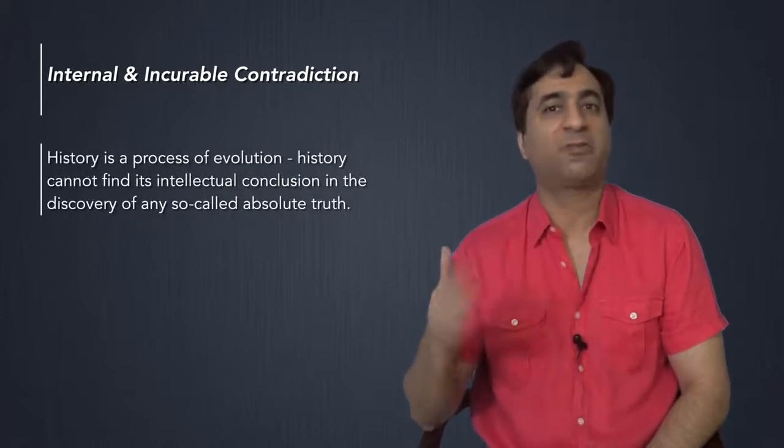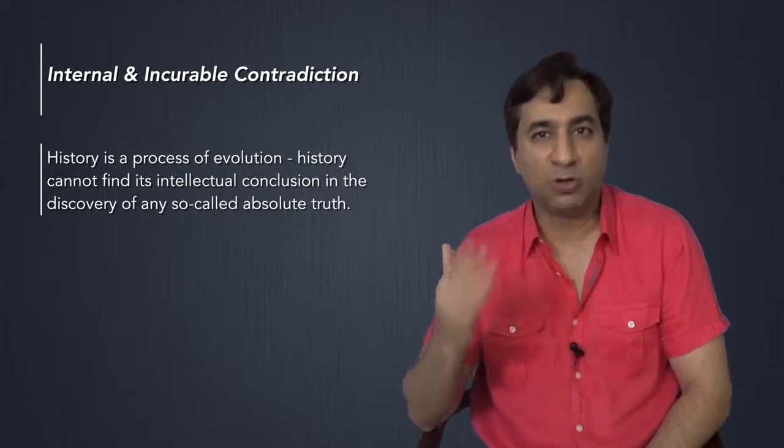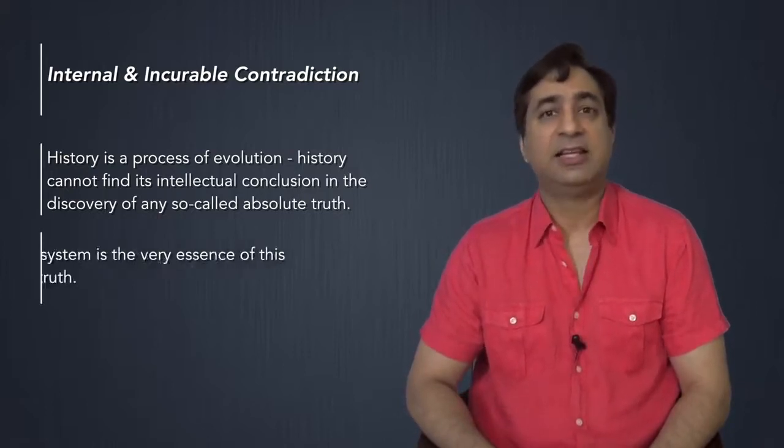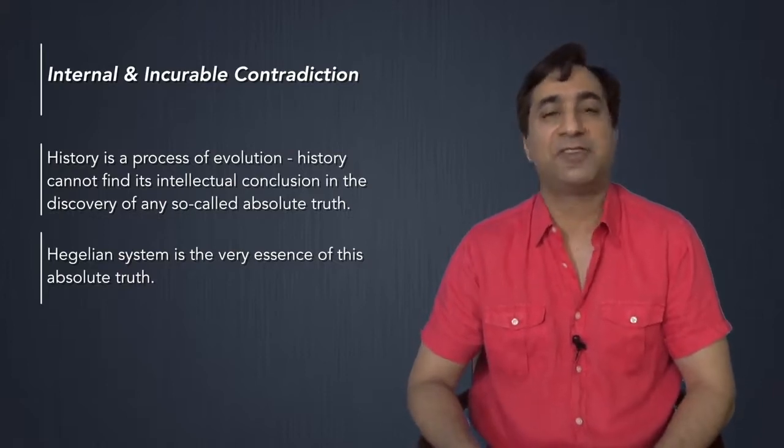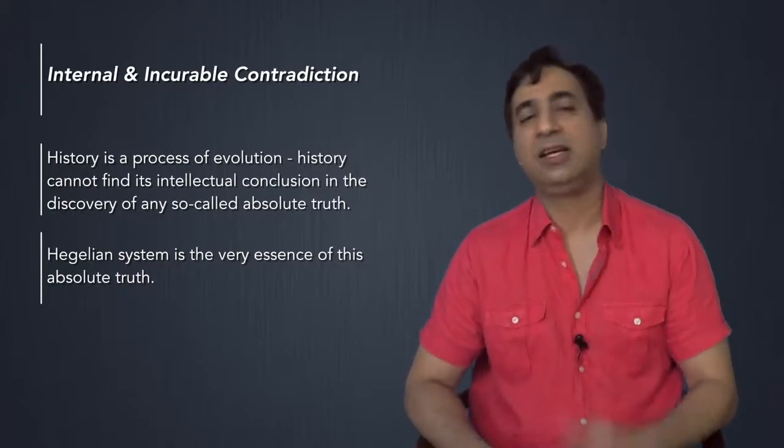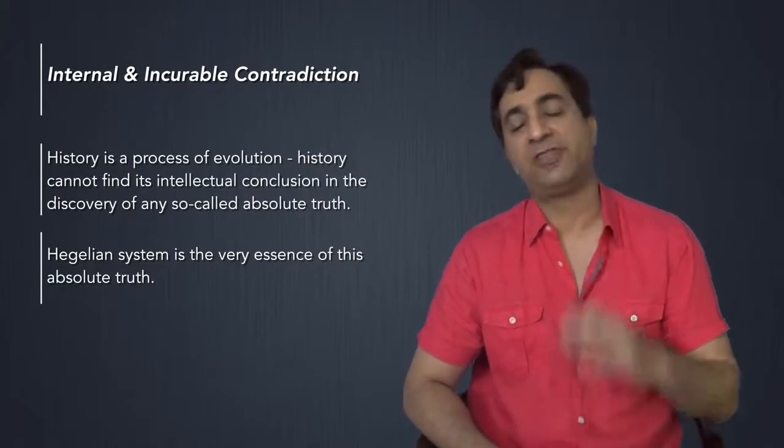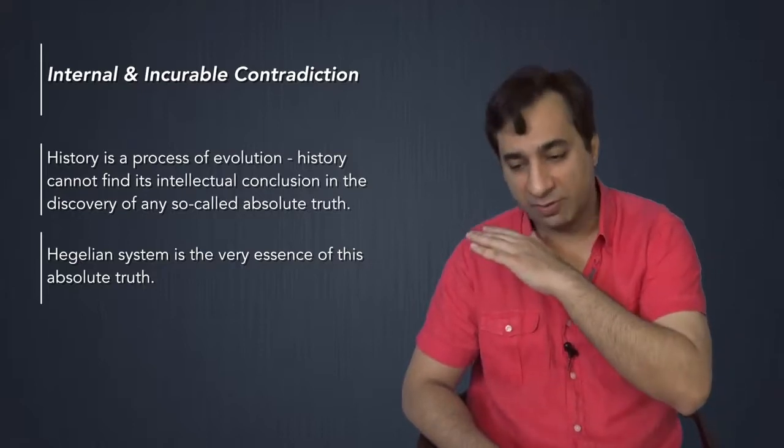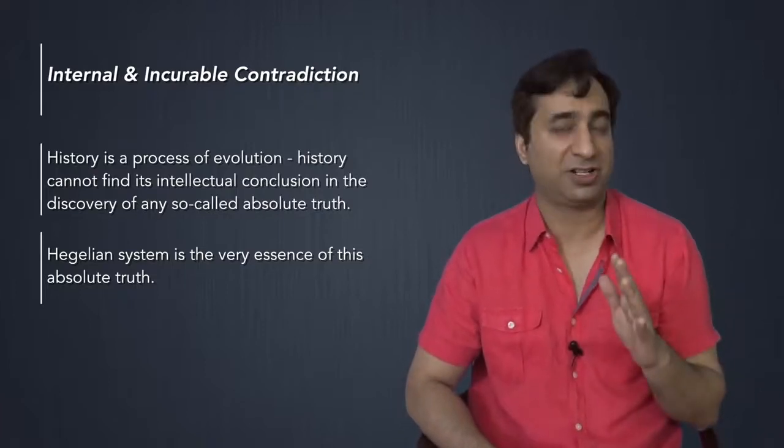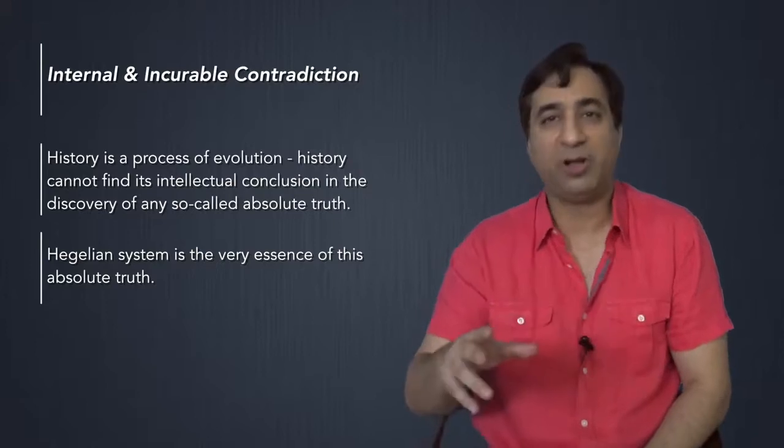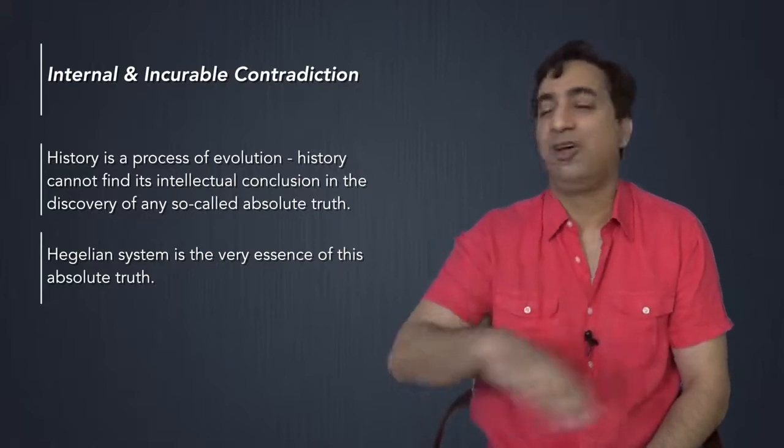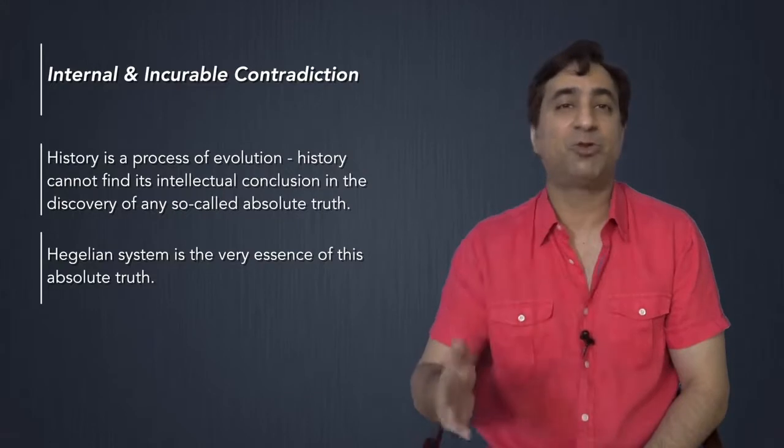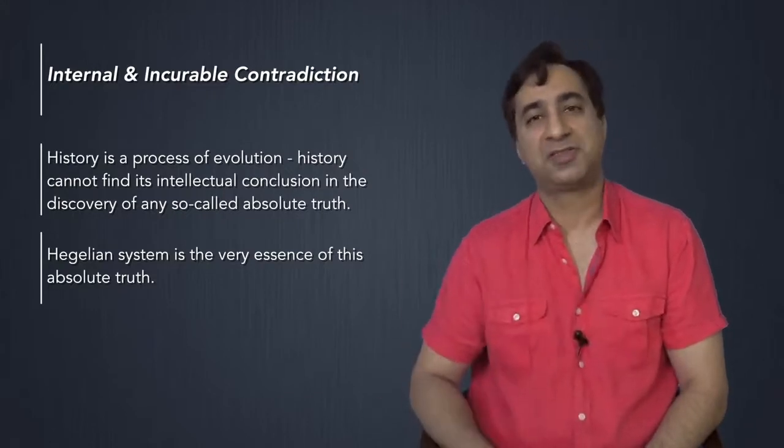And this was the internal and incurable contradiction in Hegel. History is a process of evolution, of course. But history cannot find its intellectual conclusion in the discovery of any so-called absolute truth, said Marx and Engels. The Hegelian system is the very essence of this absolute truth. Hegel, in fact, thought that he had arrived at the conclusion of the development of philosophy, that his ideas had kept, finished all philosophical discussion. And in fact, he thought that in the evolution of politics, the French Revolution had finished off all the possibility of the evolution of history itself. So philosophy and history, according to Hegel, had come to an end with the French Revolution and his own system of dialectics.